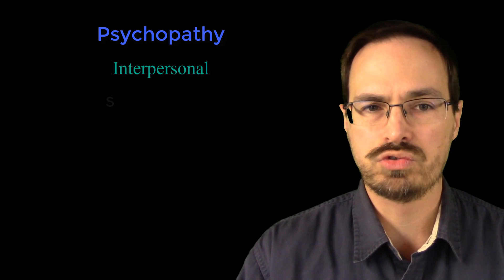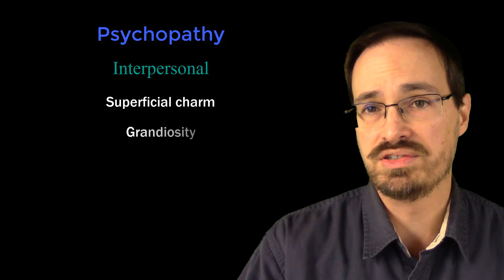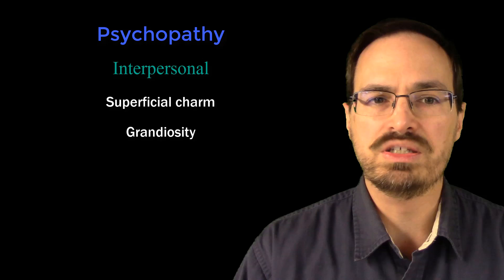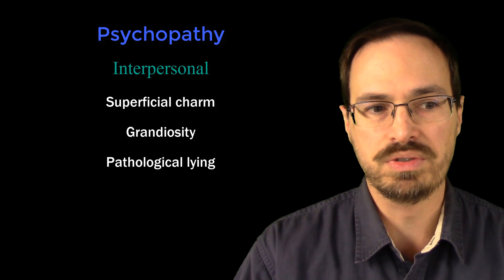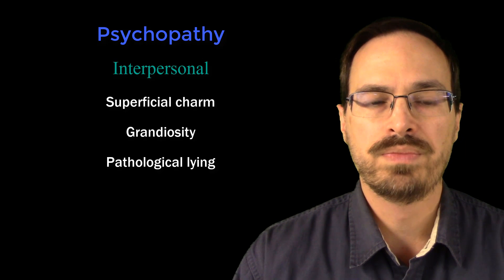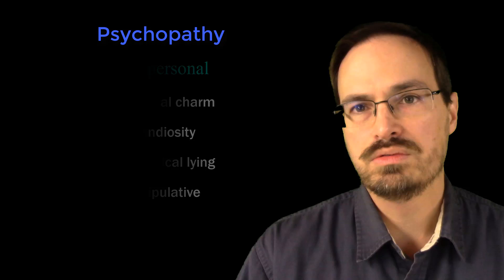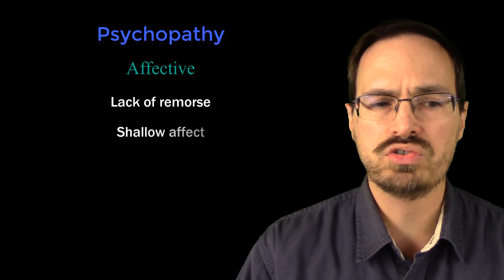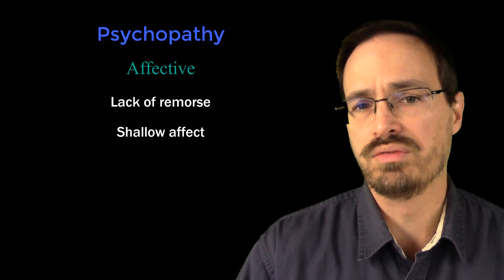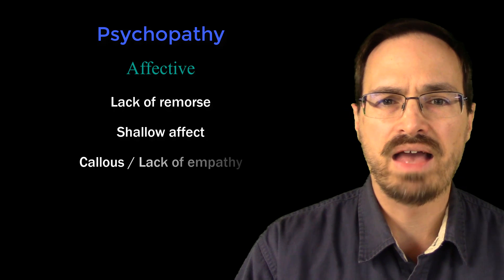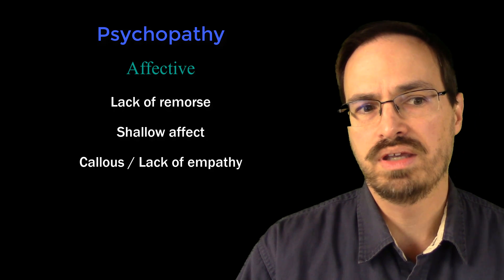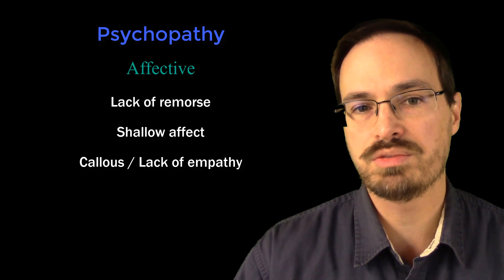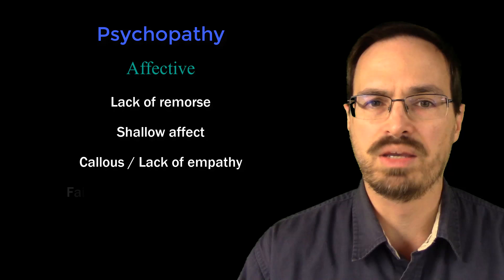With the interpersonal facet of Factor 1 we see superficial charm, grandiosity (like we might see with narcissistic personality disorder), pathological lying, and a tendency to be manipulative. With Facet 2, the affective facet, we see a lack of remorse (as with antisocial personality disorder), shallow affect (which we associate with histrionic personality disorder), being callous and having a lack of empathy (closely related to narcissistic personality disorder), and a failure to accept responsibility.